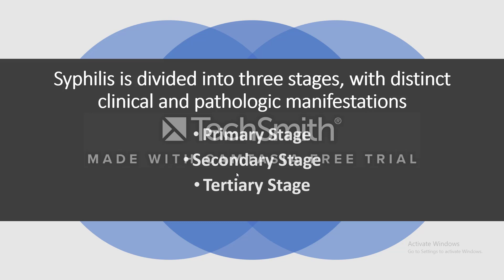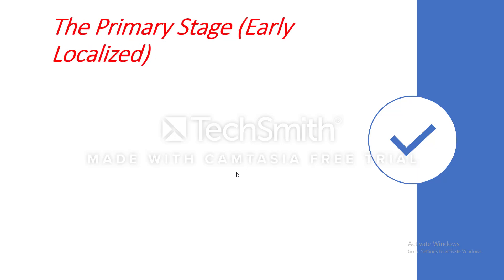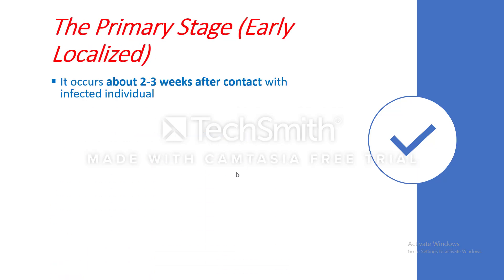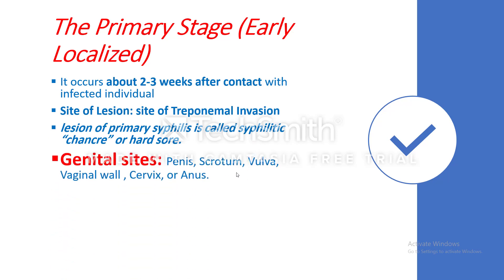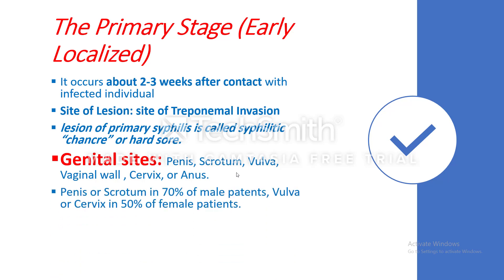Syphilis is divided into three stages with distinct clinical and pathologic manifestations: primary, secondary, and tertiary stage. The primary stage is the early localized stage, occurring two to three weeks after contact with an infected individual. The lesion is called the syphilitic chancre or hard sore, occurring on genital sites — penis or scrotum in males, and vulva, vaginal wall, cervix, or anus in females. The penis or scrotum is involved in 70% of male patients, and the vulva or cervix in 50% of female patients.